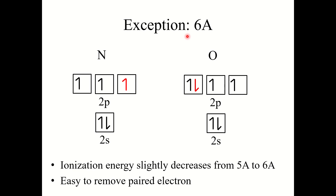A similar exception occurs going from column 5A to 6A — nitrogen to oxygen. We'd expect ionization energy to increase since oxygen is smaller, but it actually slightly decreases. This is because it is slightly easier to remove a paired electron in oxygen than to remove an unpaired electron from nitrogen. If oxygen loses an electron, it achieves a half-filled p orbital, which is stabilizing. But if nitrogen loses an electron, it loses that half-filled p orbital, which it would not want.